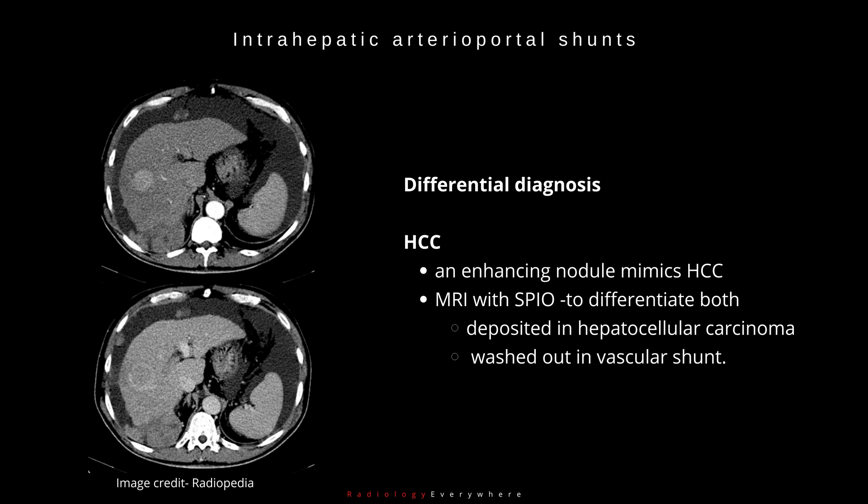When considering the differential diagnosis, the CT appearance of an enhancing nodule mimics hepatocellular carcinoma. The best way to differentiate this is by using MRI with superparamagnetic iron oxide, which is deposited in hepatocellular carcinoma and washed out in vascular shunt.